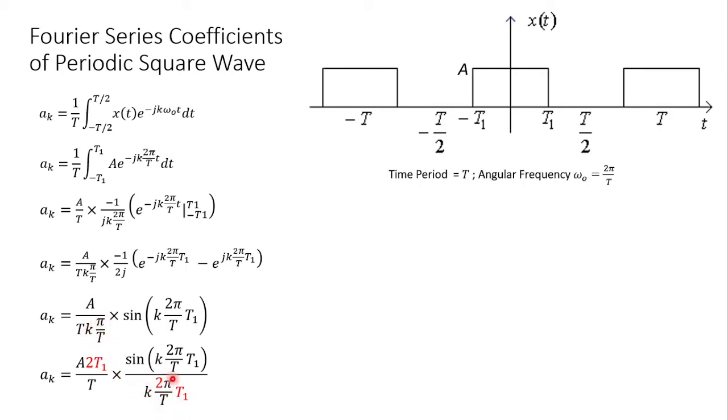We have used the variables kπ/T from here and blocked them over here. In the sixth equality, we have sin(x)/x which can be represented in terms of a sinc function. Now we have sinc(k·2π/T·t₁), and the constant coefficient with it is 2At₁/T.